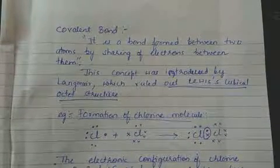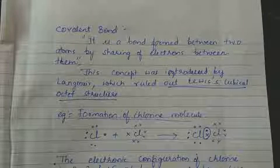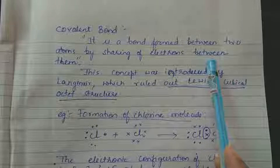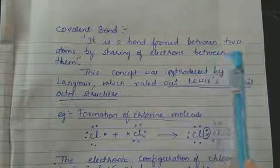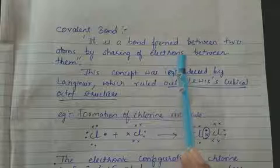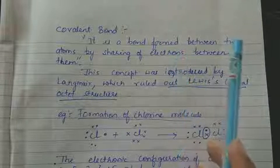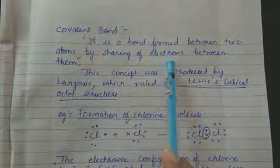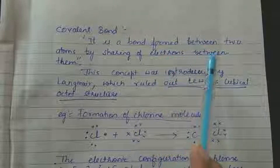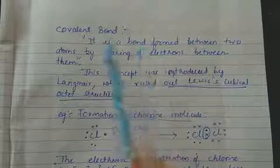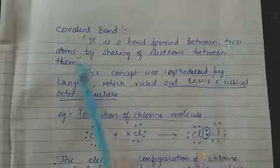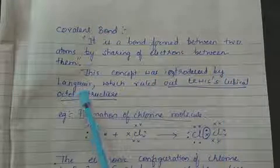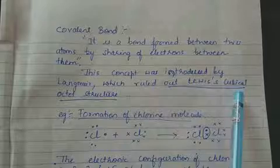In today's video we shall learn about a covalent bond. A covalent bond is formed between two atoms by sharing of electrons. In case of ionic bonds there is complete transfer of electrons from metals to non-metals, but in case of covalent bonds there is sharing of electrons.